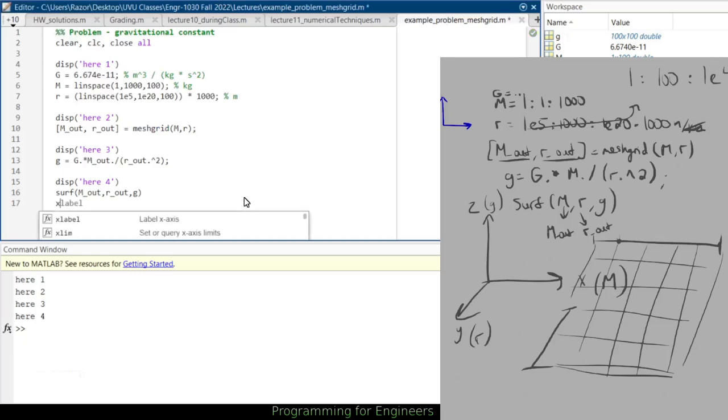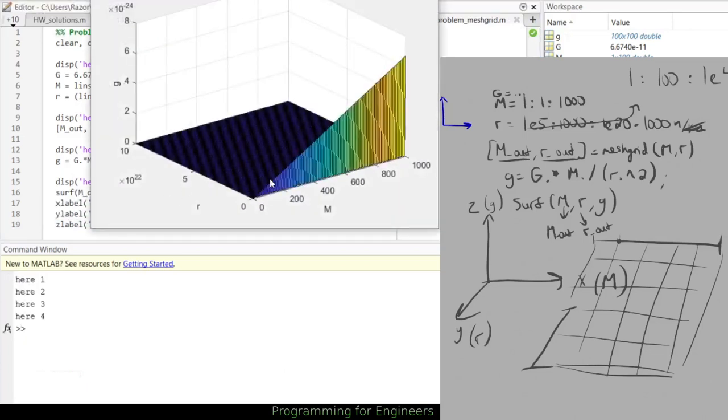Yeah, at each of these points you can see it's really accelerating up here. So if I do a x label m, y label r, and z label g, and this.